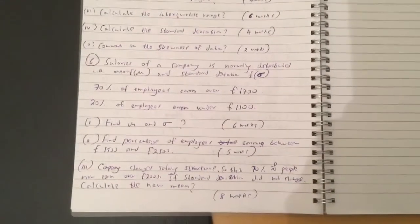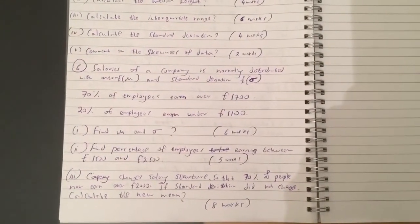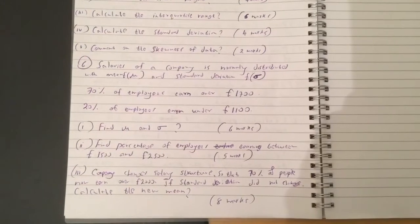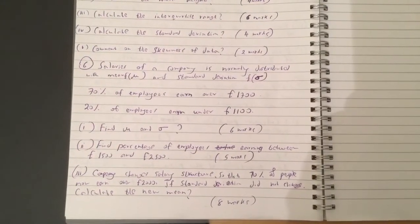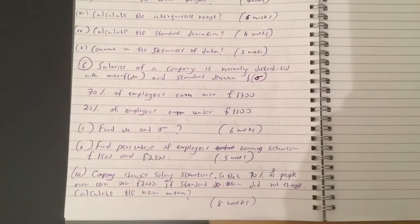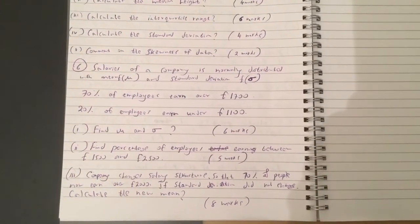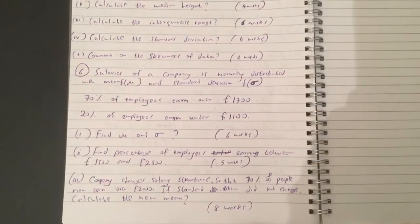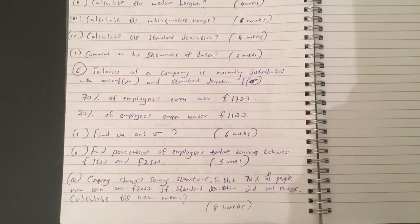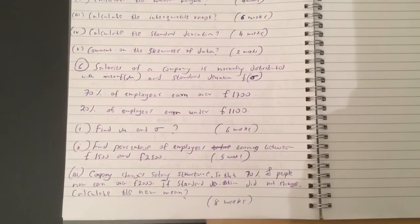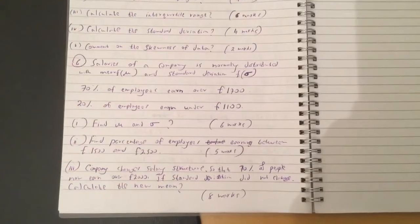Question 6. Salaries of a company is normally distributed with mean mu and standard deviation sigma. 70% of employees earn over $1,700 and 20% of employees earn under $1,100. Find mu and sigma. Find percentage of employees earning between $1,500 and $2,500.